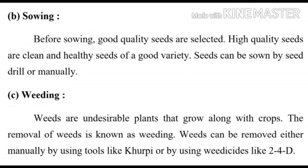B. Sowing: Before sowing, good quality seeds are selected. High quality seeds are clean and healthy seeds of a good variety. Seeds can be sown by seed drill or manually.